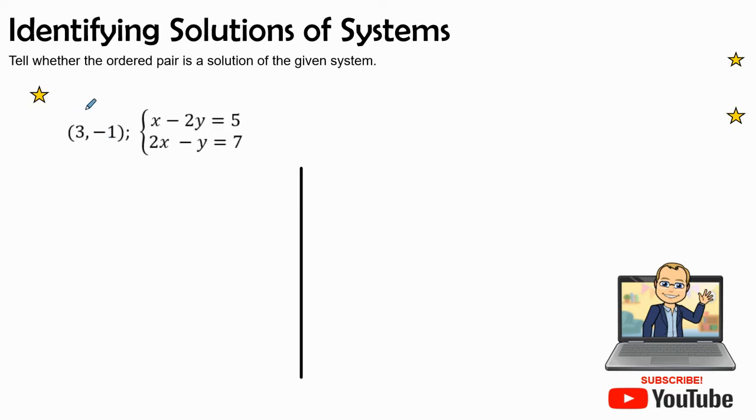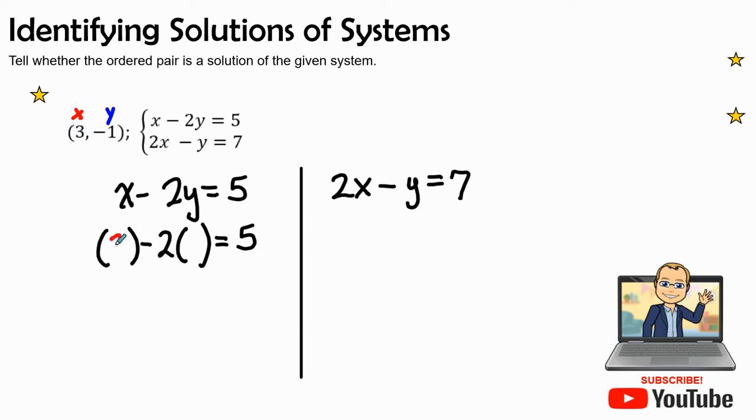So let's look at this point. Here's my x and here's my y. And I'm going to go ahead and write x minus 2y equals 5. And the second equation is 2x minus y equals 7. My x value I'm going to replace with a parenthesis times minus 2 times my y value equals 5. So here we see 3 represented by x, and for the variable y, we're going to plug in a negative 1.